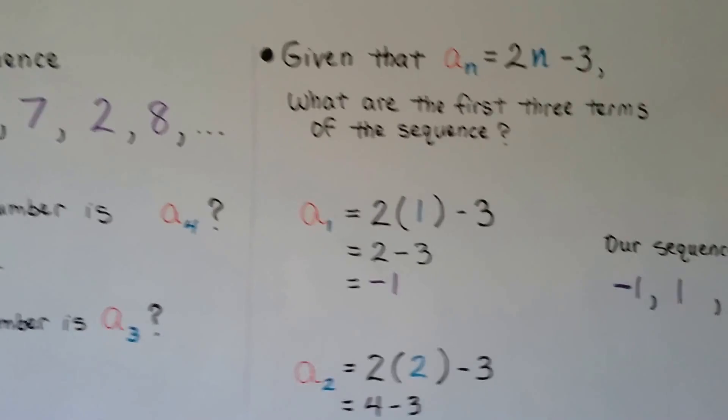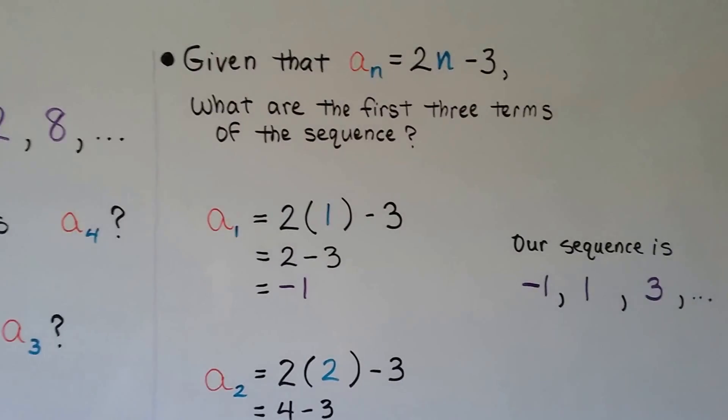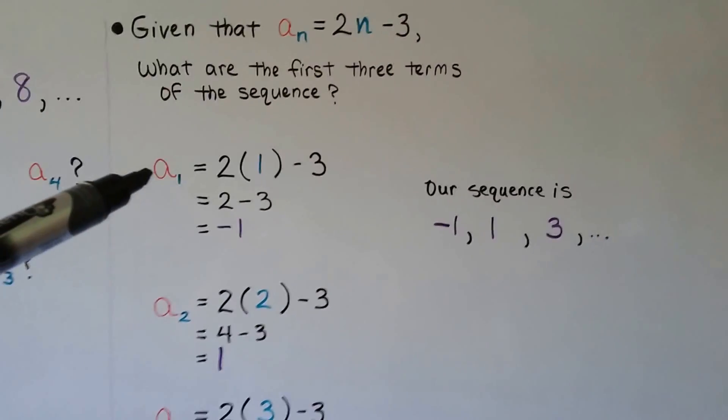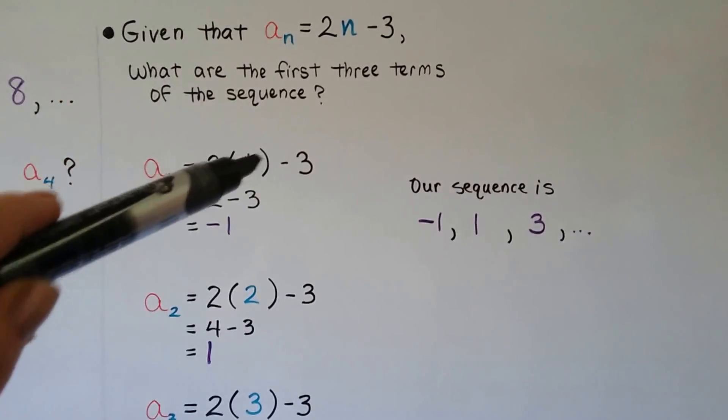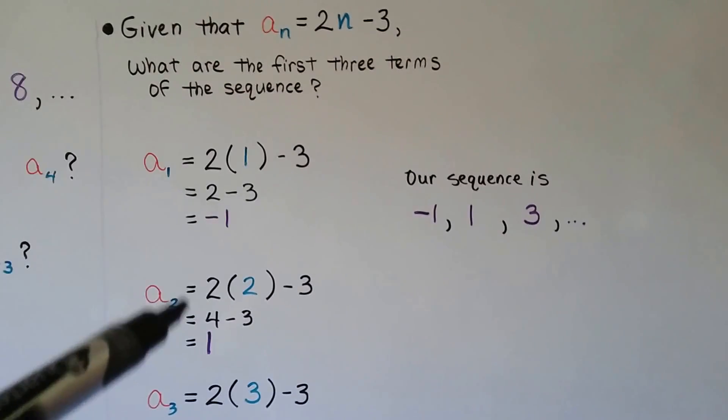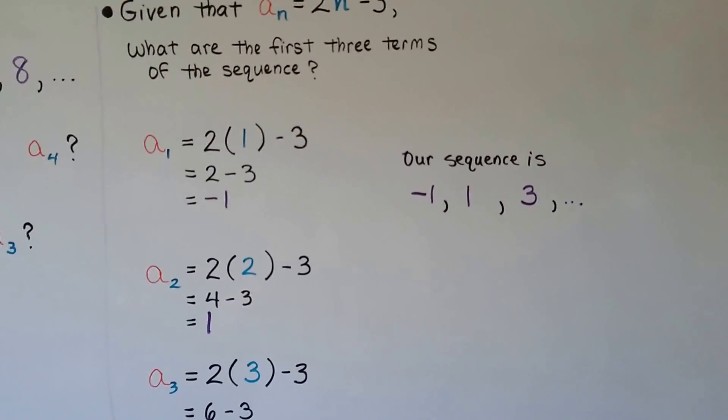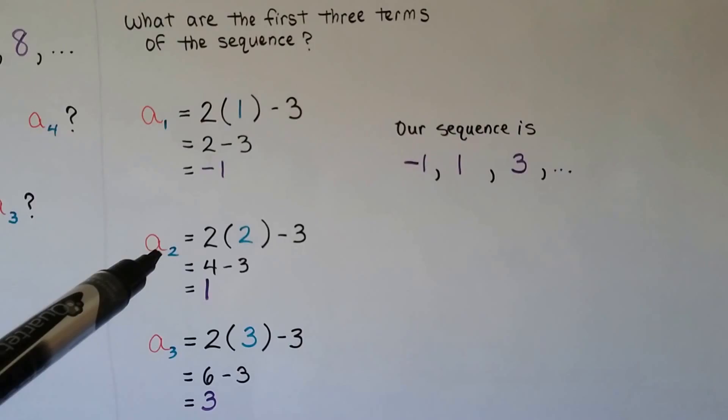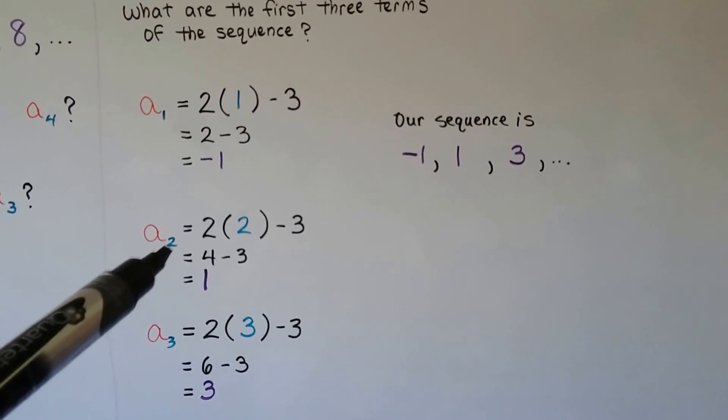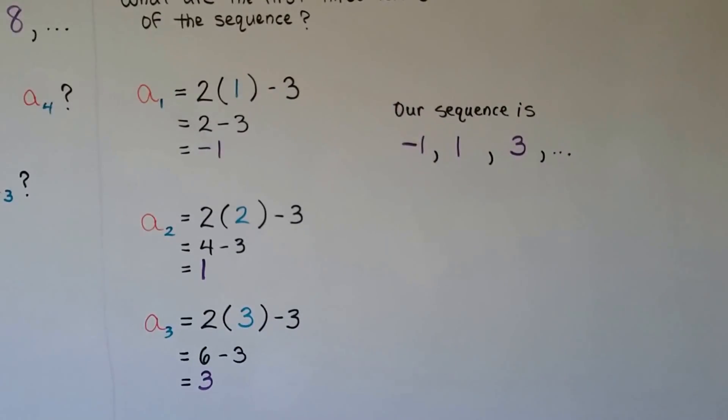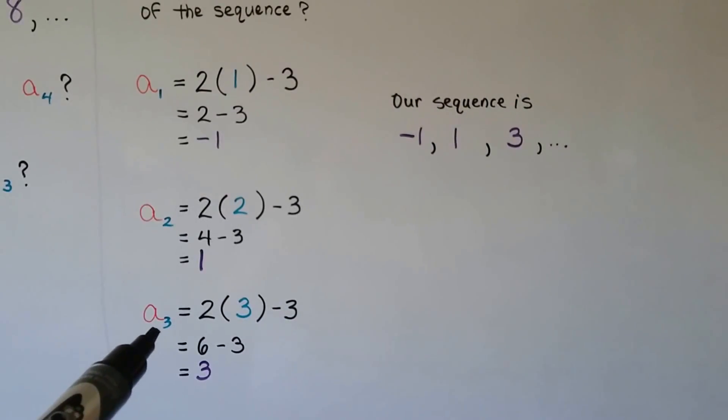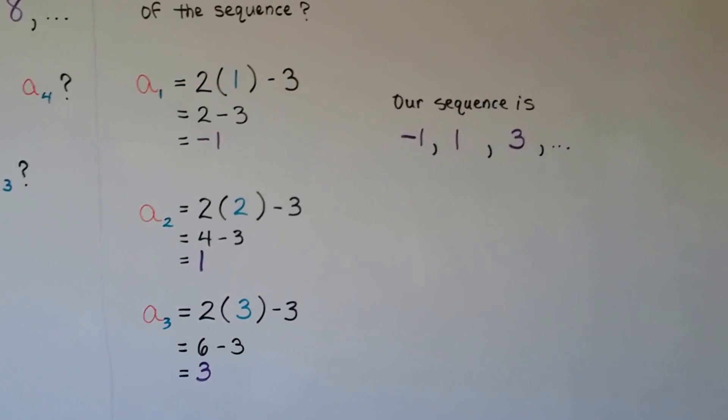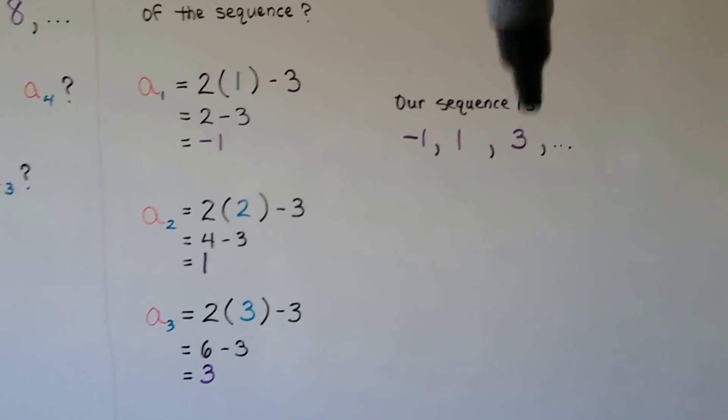We've got one last one. Given that a sub n is equal to 2 times n minus 3, what are the first three terms of the sequence? Well, the first one, if we put a 1 here, we have to put a 1 here, don't we? That means we have 2 times 1 minus 3. That means we have 2 minus 3. That means we have a negative 1. For a sub 2, the second number, the second term of the sequence, we have 2 here, so there's going to be a 2 there. We're going to have 4 minus 3. That's going to be a 1. For the third term, we've got a 3 here, so there's going to be a 3 there. We're going to have 6 minus 3. We're going to have a 3. So our sequence is negative 1, 1, 3.